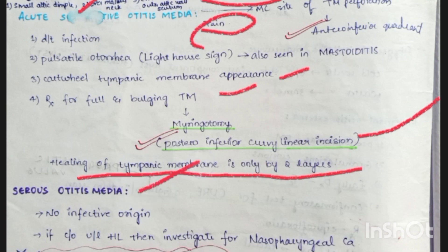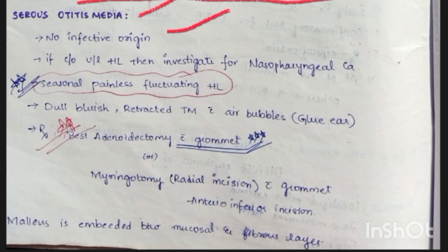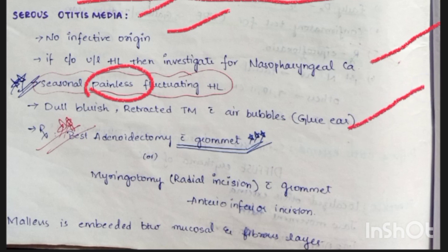In serous otitis media, there is no infective origin. If a patient complains of unilateral hearing loss, investigate for nasopharyngeal carcinoma. There is seasonal, painless, fluctuating hearing loss — unlike ASOM, which is painful. A dull, bluish, retracted tympanic membrane with air bubbles is known as glue ear. Treatment is adenoidectomy with grommet insertion; myringotomy uses a radial incision with grommet insertion — antero-inferior incision. The malleus is embedded between the mucosal and fibrous layers.